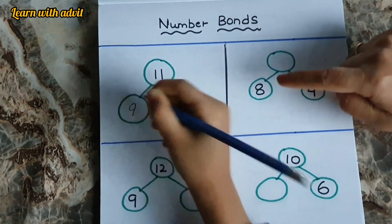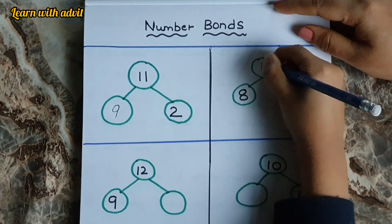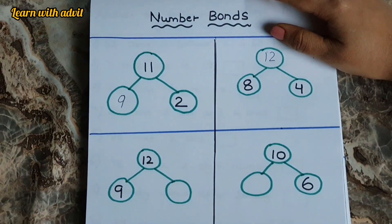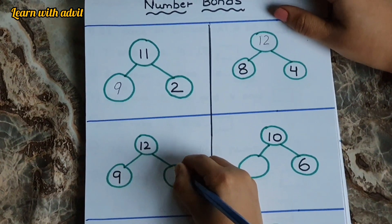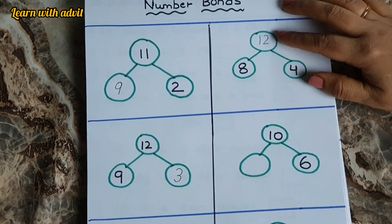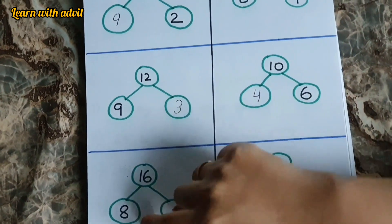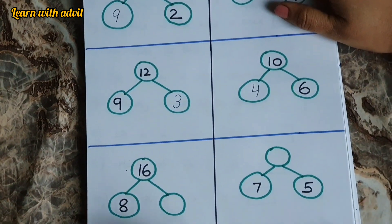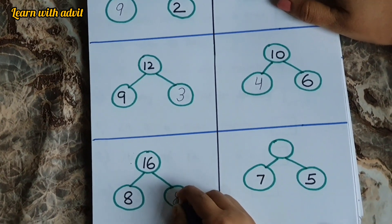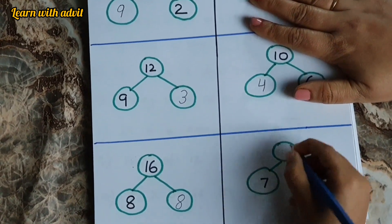Here 8 and 4. 8 plus 4 is 12. Here the number is 12 and 9. So other number is 12 minus 9 equals 3. Good. Here 10, so number is 10 minus 6 equals 4. 16, 8. What number is? 16 minus 8 equals 8. It's a double. Here 7 and 5. So number is 7 plus 5 equals 12.